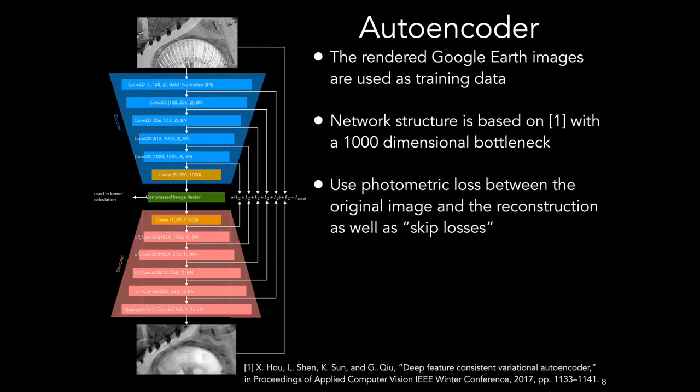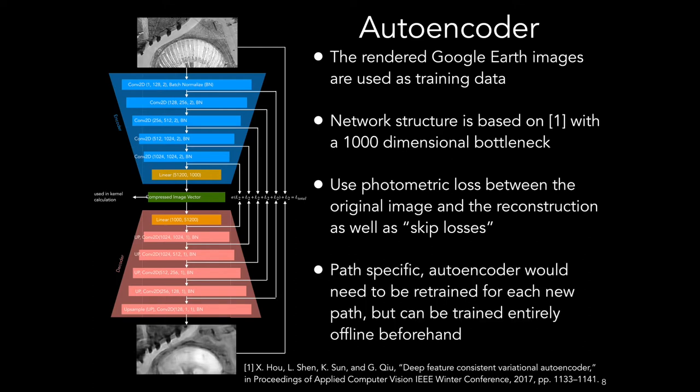For the loss function, we used a photometric loss between the original image and the reconstructed image, as well as what we like to call skip losses, which are just an L2 loss between the output after each layer of the encoder and the corresponding decoder layer. This part of the method is path specific, so an autoencoder would need to be trained for each new path, but this training can be completed entirely offline beforehand and without the UAV having to fly the desired path.